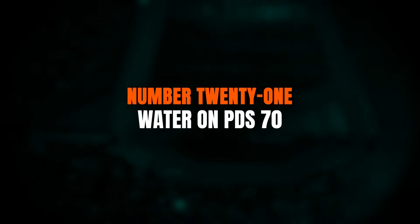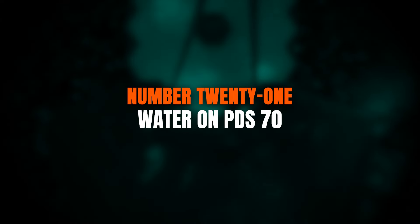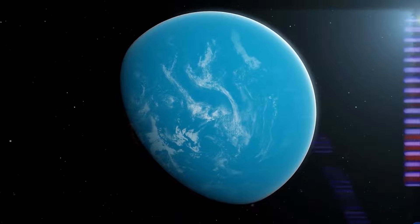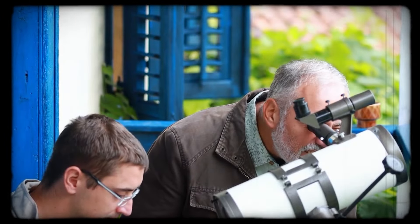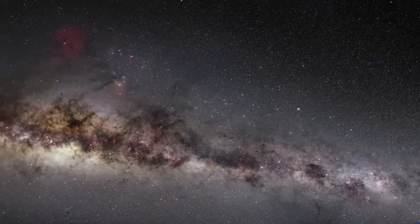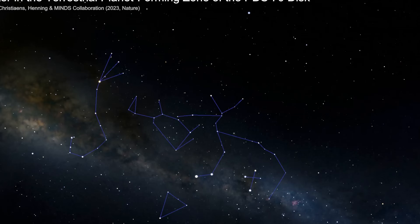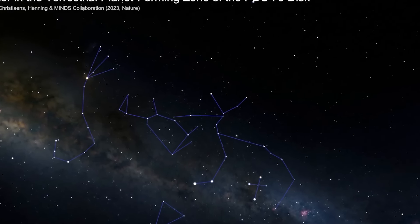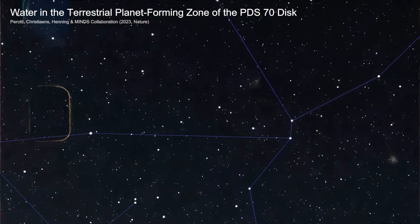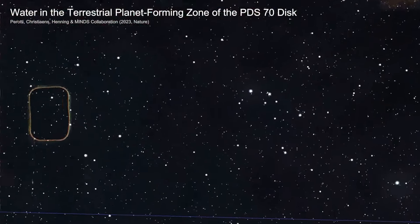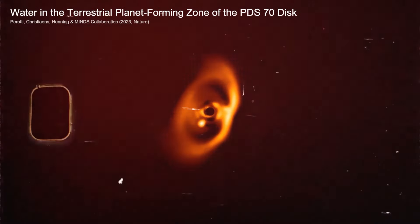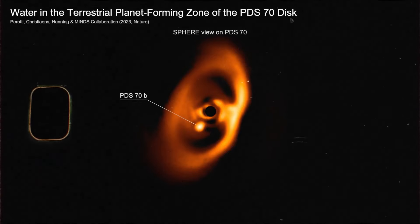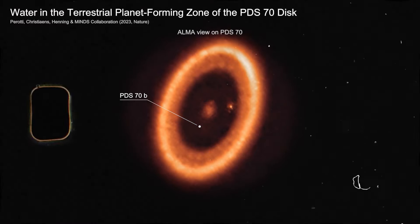Number 21. Water On PDS-70. Water is essential for all life on Earth. Simply put, no water means no life, at least as far as we currently understand it. That's why finding water in other star systems is such a big deal, and astronomers have detected water vapour in the PDS-70 system. What's even more remarkable is that this system is still in the process of forming planets. Right now, it's just a disk of gas and dust, and the water vapour was found in the inner regions of this disk, the exact place where planets like Earth form.